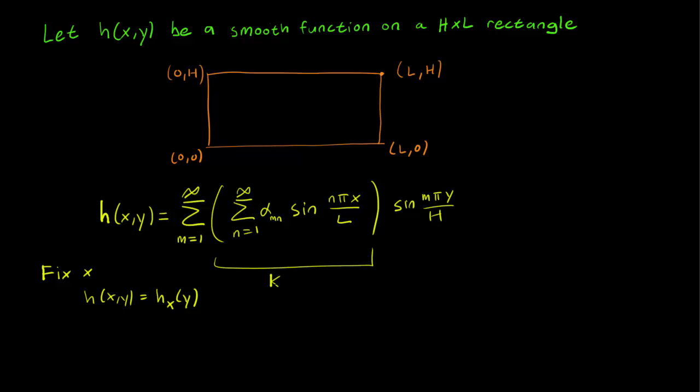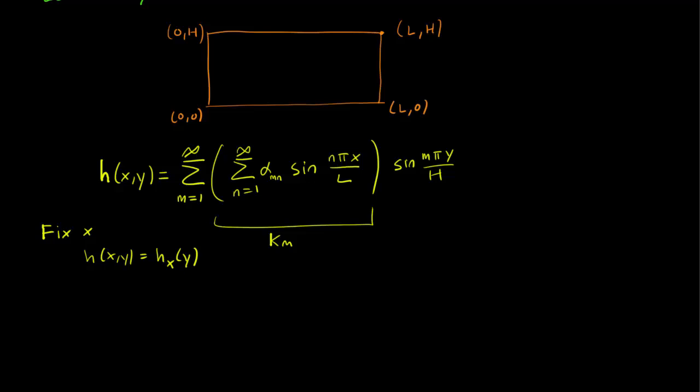Let's call the constant k_m, since it still does depend on m. So we have a k_m constant that depends on m, and we write down our h(x,y) in this form.